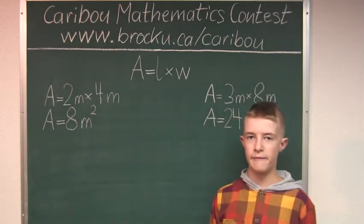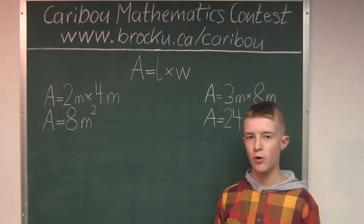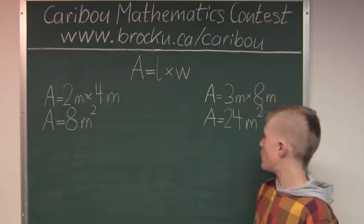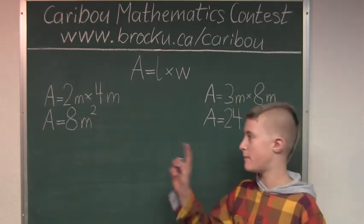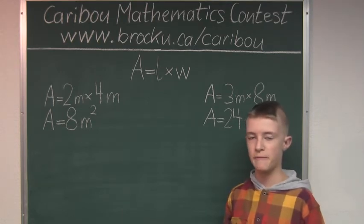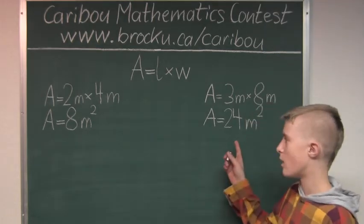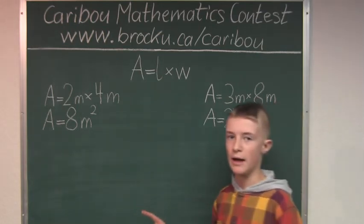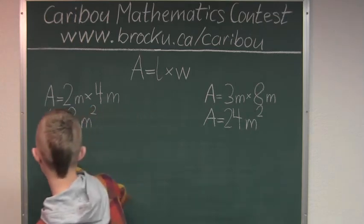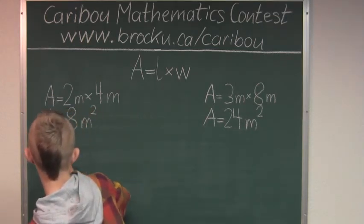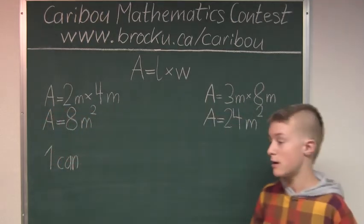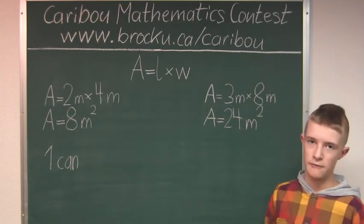Now we can find the ratio between both walls since we have the areas. We do 24 divided by 8, which is 3. So we know that 3 times as many cans of paint are needed for the second wall. Since 1 can of paint is needed for the first wall, we know that 3 cans of paint are needed for the second wall.